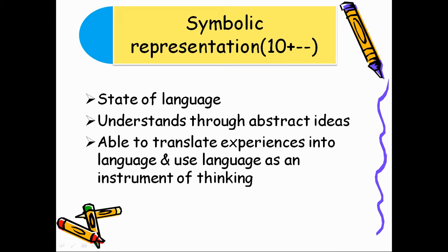So Bruner describes three stages. In the first stage, the child learns through action. In the second stage, he develops some images. In the third stage, he uses abstract ideas and language to explain his thoughts.